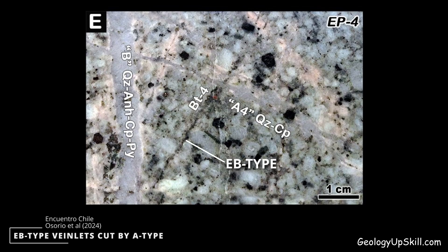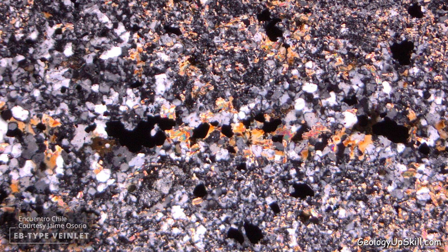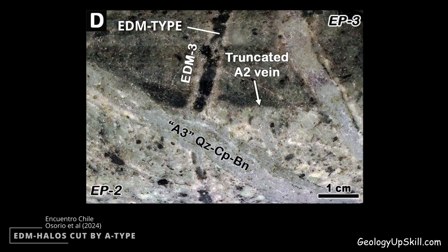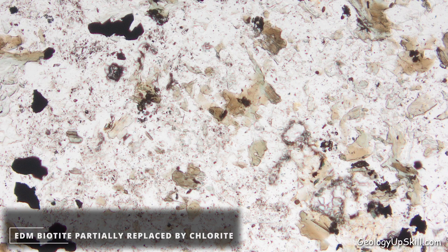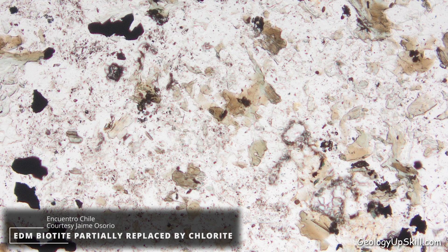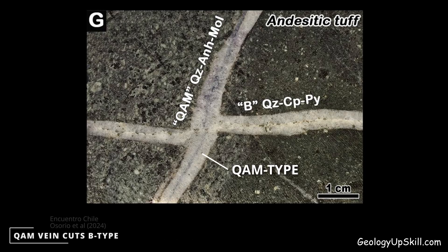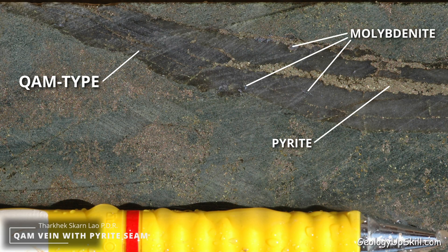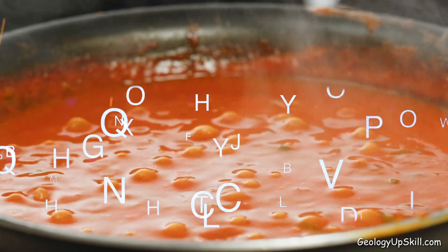EB, for early biotite, refers to thin wispy veinlets filled almost exclusively with biotite. EDM, for early dark mica, refers to early fractures with alteration halos of dark-coloured micas, mostly biotite; the fractures typically have little or no infill, and the biotite is often partially or completely replaced by chlorite during subsequent hydrothermal events. QAM, or quartz-anhydrite-molybdenite veins, are similar to B-veins except that molybdenite is the dominant sulphide instead of chalcopyrite.